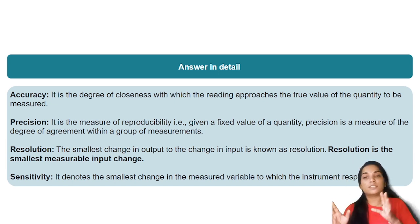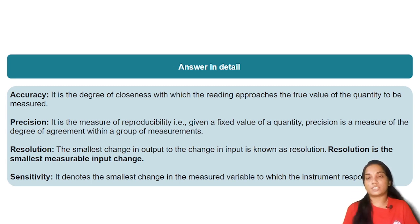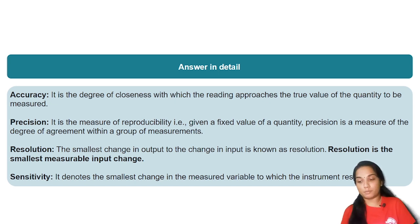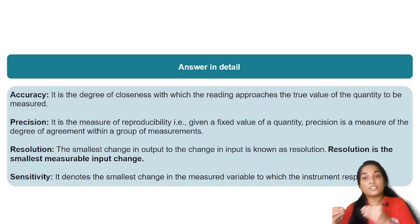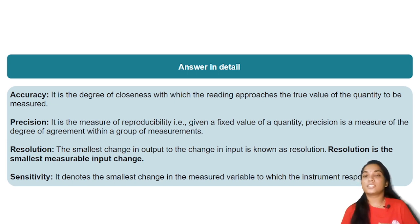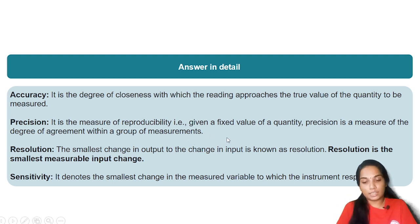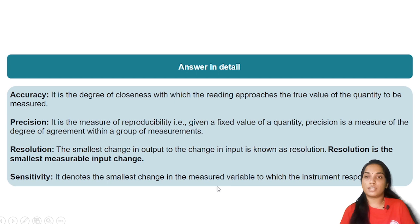Resolution is simply the smallest measurable input change of the instrument. Sensitivity is the smallest change in the measured variable to which the instrument responds — higher changes in the meter indicate higher sensitivity. The key words are: degree of closeness, degree of agreement within the group of measured values, smallest measurable input change, and sensitivity.